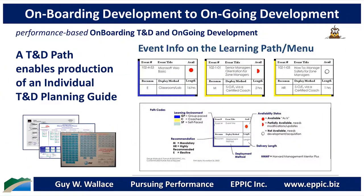The path provides a visual for assessing the curriculum architecture. When the content exists, it is given a full red circle. When it partially exists and might require modification, it gets a half circle. When there is nothing at all in place, it gets an open circle. This allows management to simply scan the path, read the titles, deployment methods, and estimated lengths to make business decisions about what gaps to address.